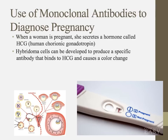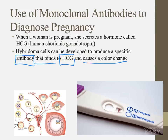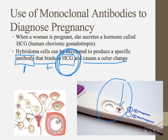Monoclonal antibodies are actually what we use to diagnose pregnancy. When a woman is pregnant, she secretes a hormone called HCG — human chorionic gonadotropin. When HCG binds with a particular antibody, it causes a color change. We use mouse hybridoma monoclonal antibody production to produce the antibody that combines with HCG and put it in the pregnancy test. When the woman uses the test, if HCG is present it causes a reaction and a color change; no HCG means no color change.